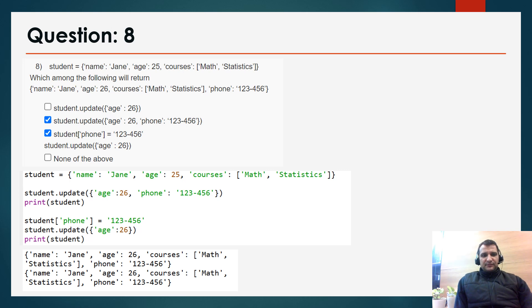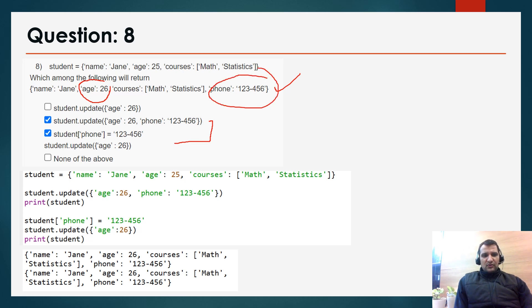Question 8: student = {'name': 'Jane', 'age': 25, 'course': 'Math and Statistics'}. Which of the following will return the required output after adding phone number 1-2-3-4-5-6? It is a multi-select type question. The two correct options are student.update({'age': 26, 'phone': '123456'}) and student['phone'] = '123'. Both correctly update age to 26 and add the phone number.